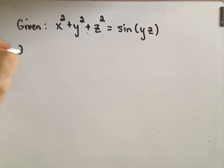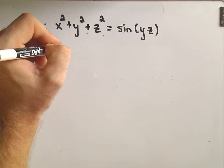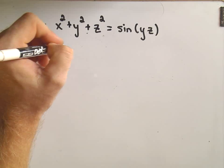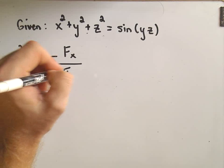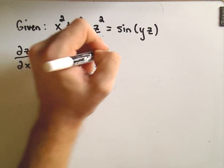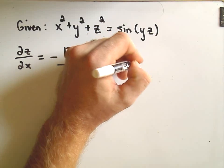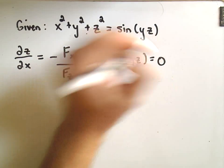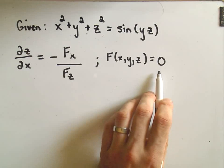So maybe let's find the partial of z with respect to x first. And again it says it's going to be the negative of the partial of f with respect to x over the partial of f with respect to z. But again it says to do that you have to have your function in the form f of x, y, z equals zero. So the first thing we're going to do is we're going to take our original equation and set it equal to zero.